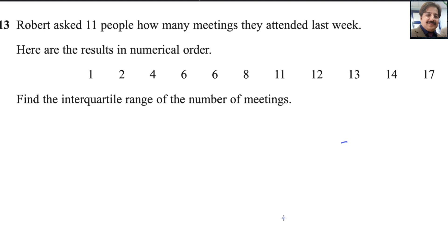Robert asked 11 people how many meetings they attended last week. Here are the results in numerical order: 1, 2, 4, 6, 6, 8, 11, 12, 13, 14, 17. There are 11 numbers.